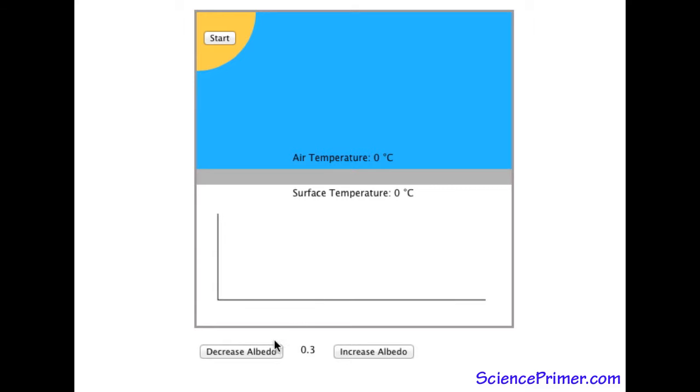The albedo can be adjusted with the decrease and increase buttons at the bottom. Values range from 1 for a perfectly reflective surface down to 0 for a surface that absorbs all the energy that falls on it.